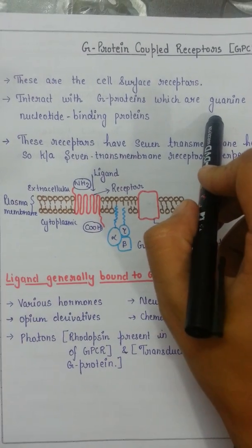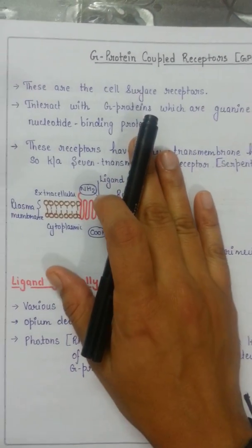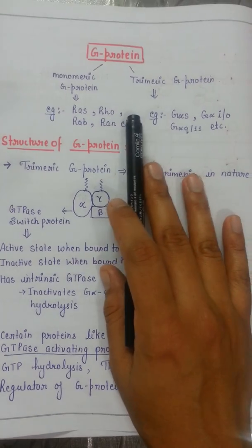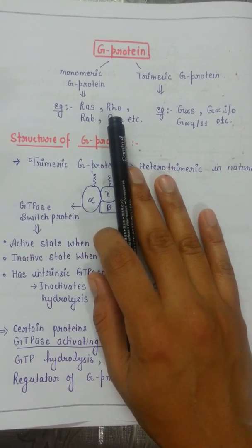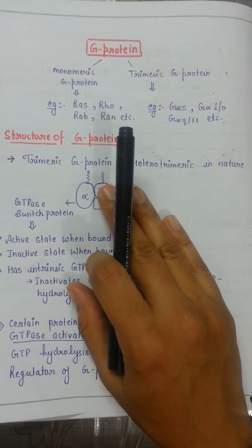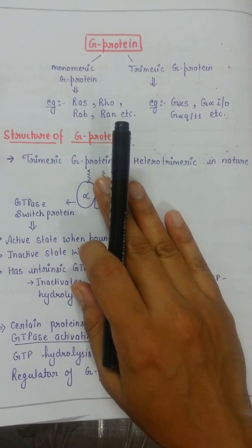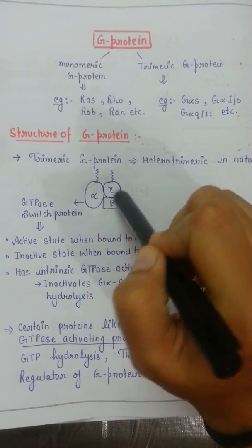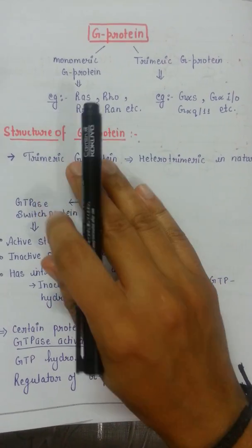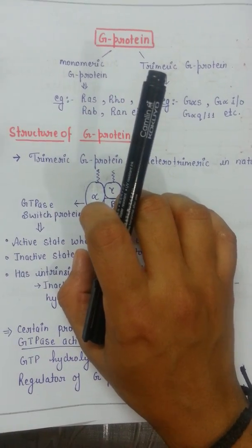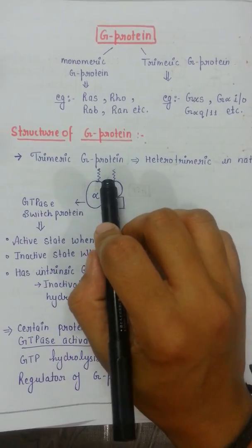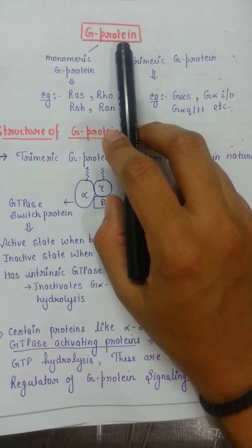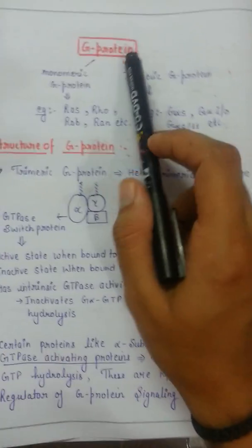Why do we call it a G-protein coupled receptor? The name signifies that this receptor binds or interacts with G-proteins. These G-proteins are the guanine nucleotide binding proteins. Before going further and knowing the pathway and how this G-protein coupled receptor works, it is very important that we understand what a G-protein is, because ultimately the response is generated because of this.